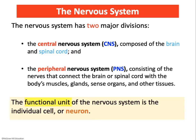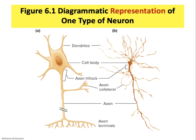The human nervous system is divided into two major divisions: the central nervous system, which consists of the brain and the spinal cord (the CNS), and the peripheral nervous system (the PNS), which consists of everything else outside those two regions. The functional unit of the nervous system is the neuron. Neurons come in many shapes and sizes. The depiction in Figure 6.1 is just a representation so we can learn the parts.